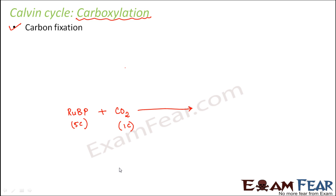So when they combine, they should form a 6-carbon compound, right? So actually initially a 6-carbon compound is formed. But this 6-carbon compound is unstable and therefore it breaks into two 3-carbon compounds. Since it is unstable, it breaks into two halves.